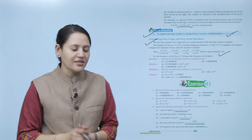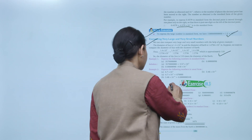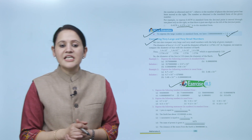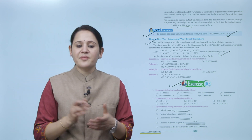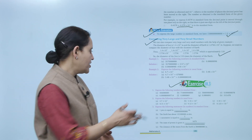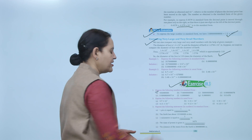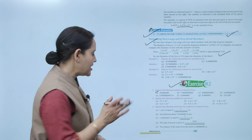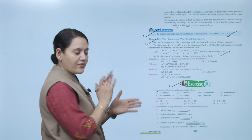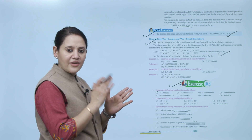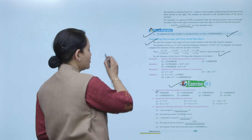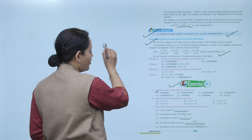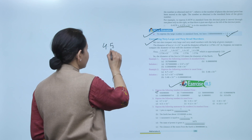Next is Exercise 10.3: express the following numbers in standard form. Here this is our given number. We have to write the number in standard form. In standard form, there should be only one digit to the left of the decimal. So we write it as 4.56.